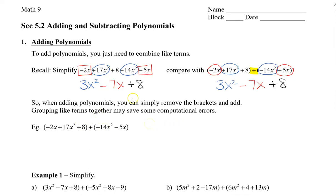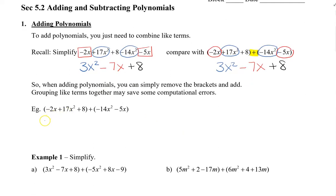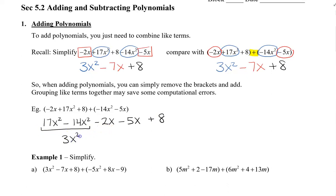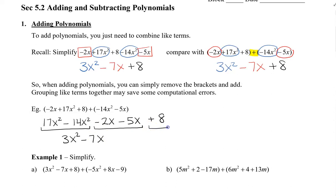What I mean by that is, let's say we have the same expression here. We're going to take 17x squared and the negative 14x squared and put those side by side because they are like, and then we have negative 2x and a negative 5x, and those are like, and then we have plus 8. So we're going to combine these first two terms to give us 3x squared, combine these two terms to give us negative 7x, and then we have our single constant at the end plus 8. Placing terms that are like side by side will eliminate computational errors.